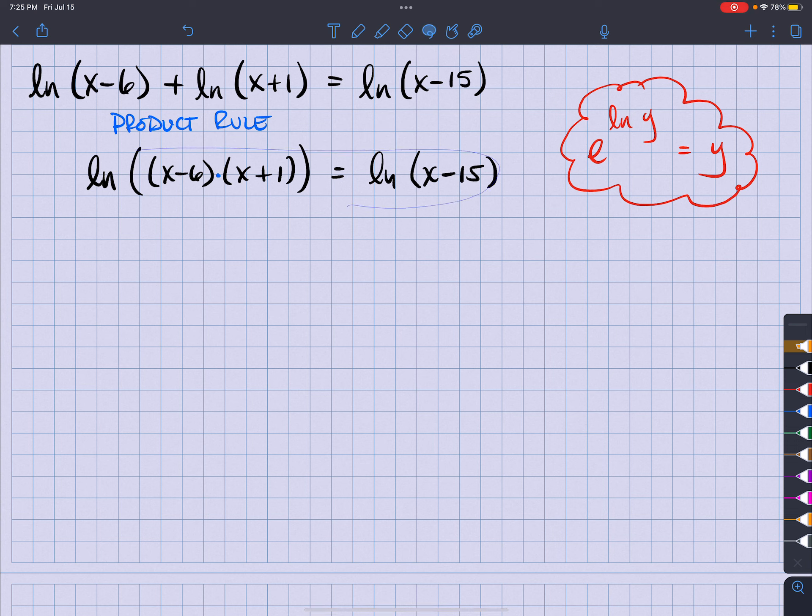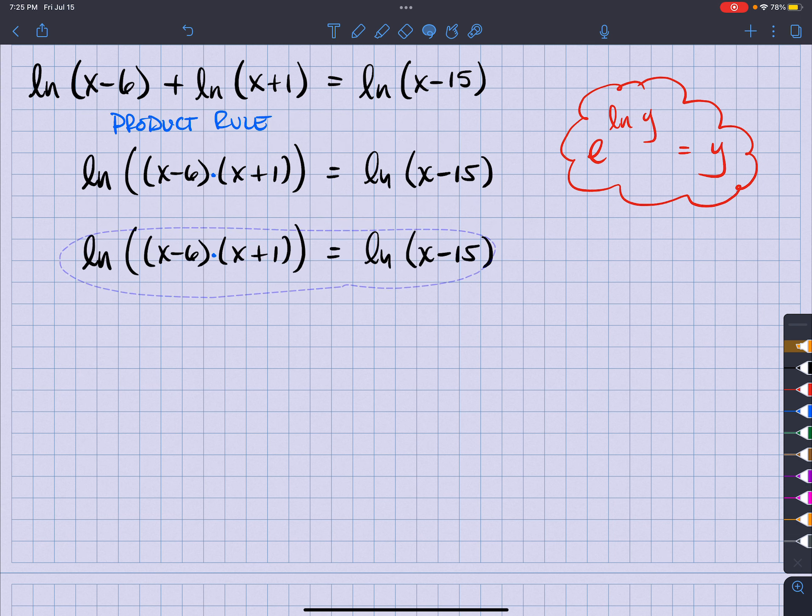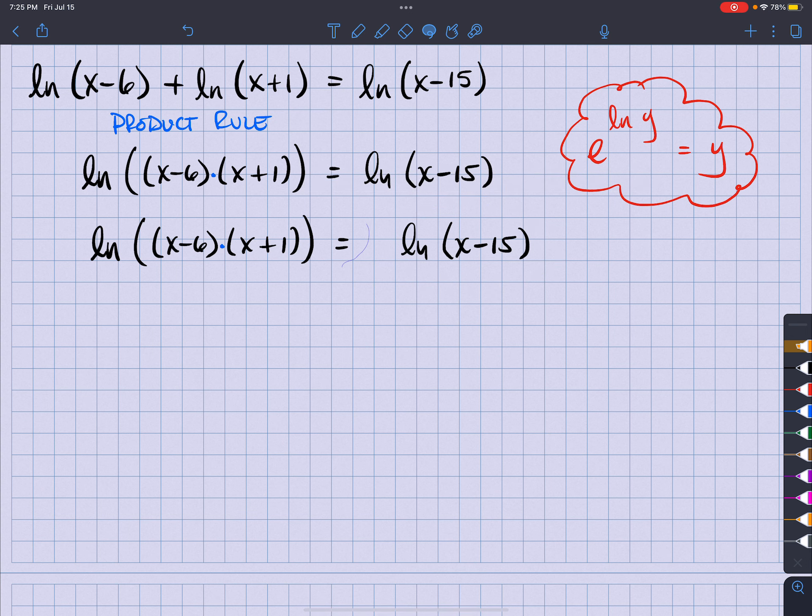So what I'm going to do is go ahead and let me duplicate this a little bit here. And what I'm going to do is give it a little bit of space and bring this down. So I'm going to do e raised to that power and e raised to that power. So what I'm going to have is (x-6) times (x+1) is equal to (x-15).